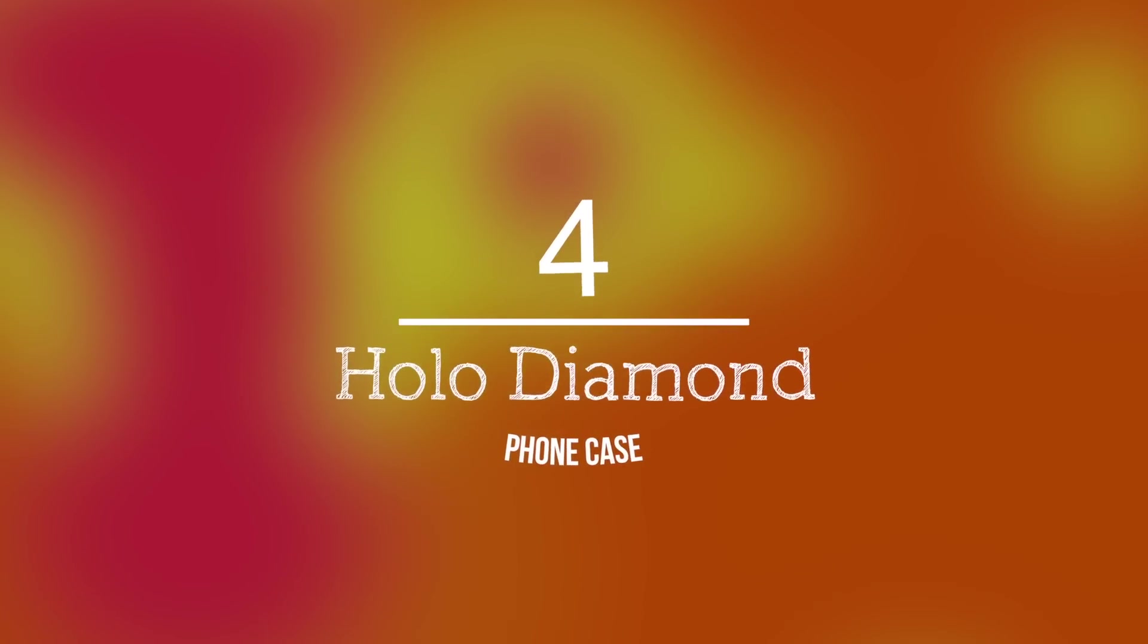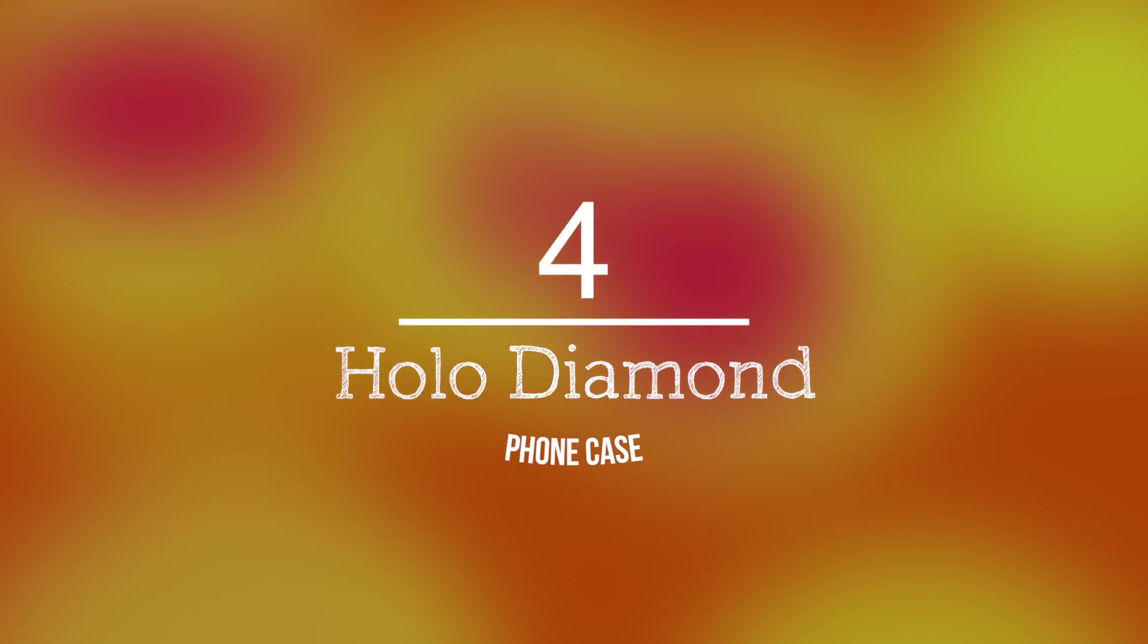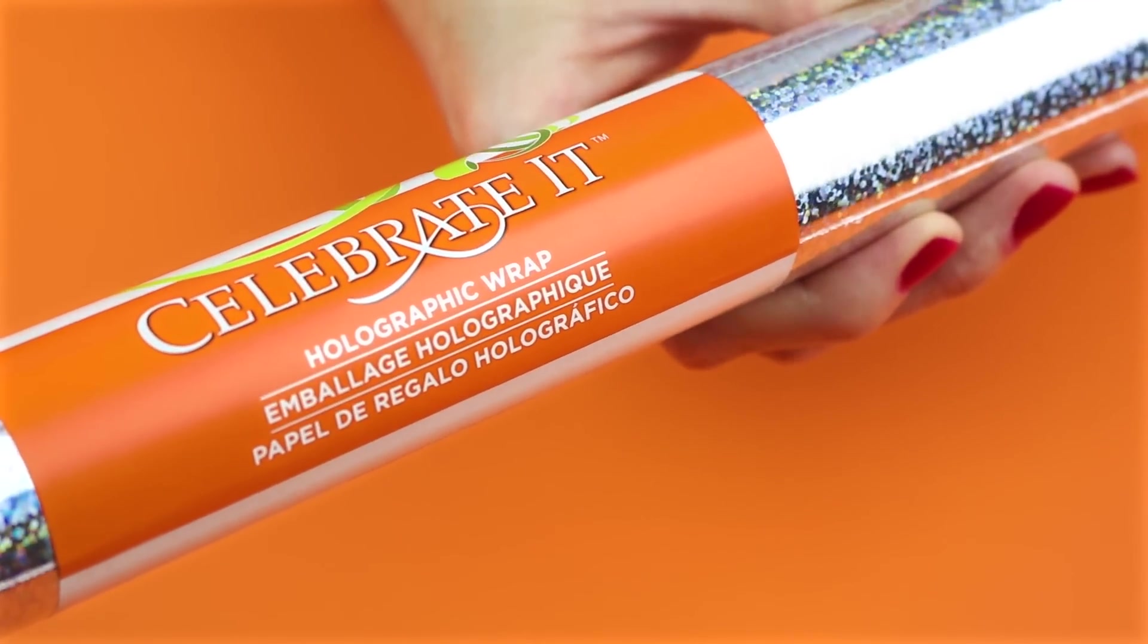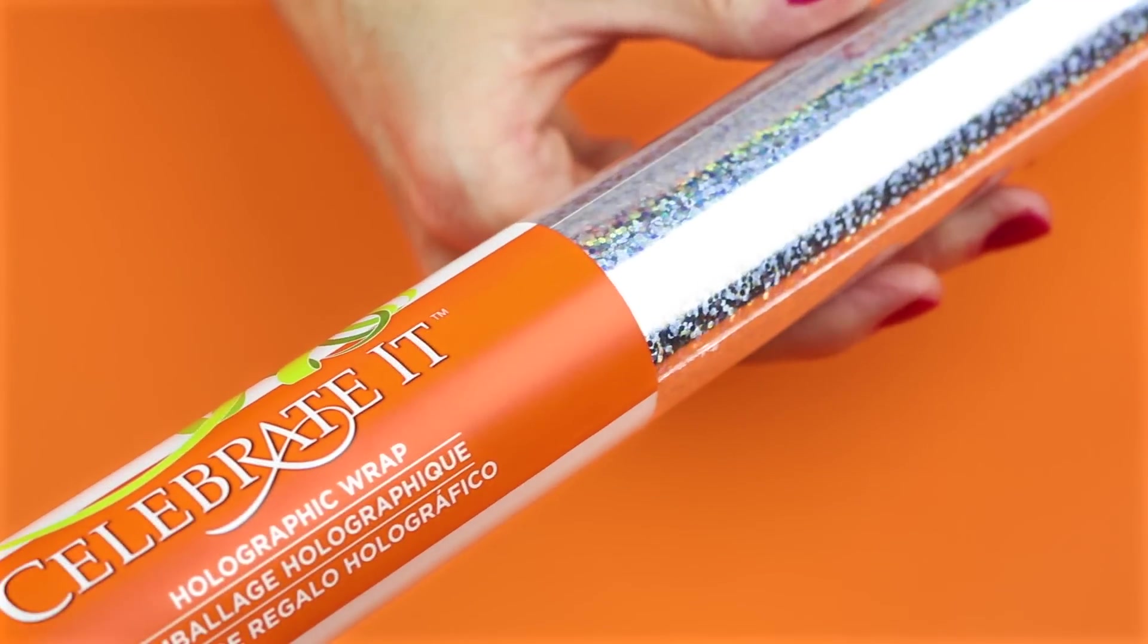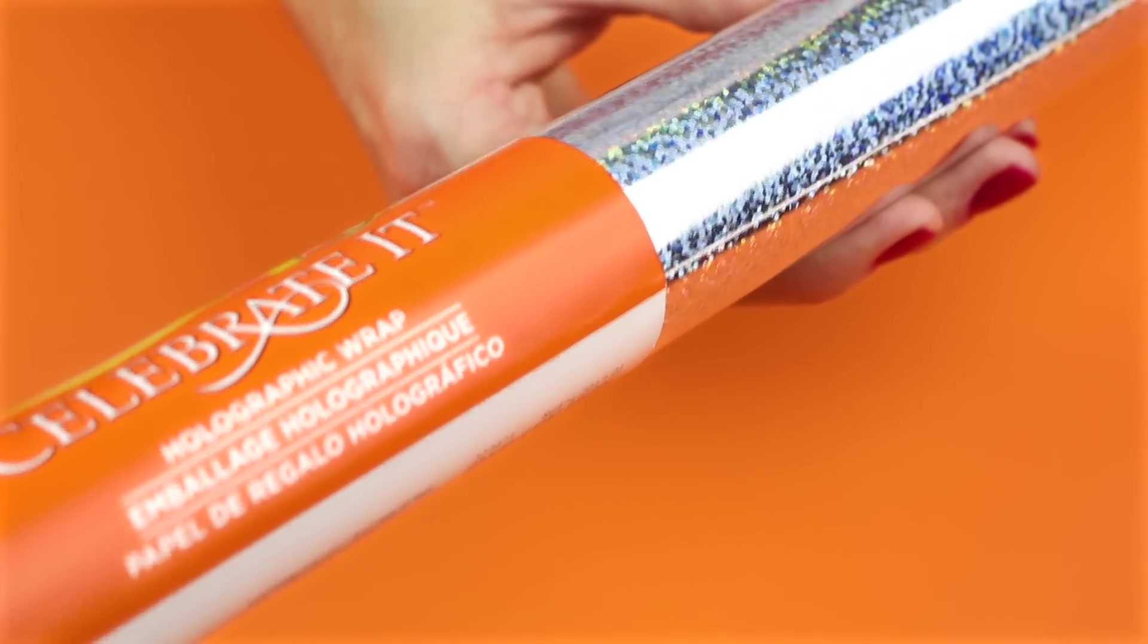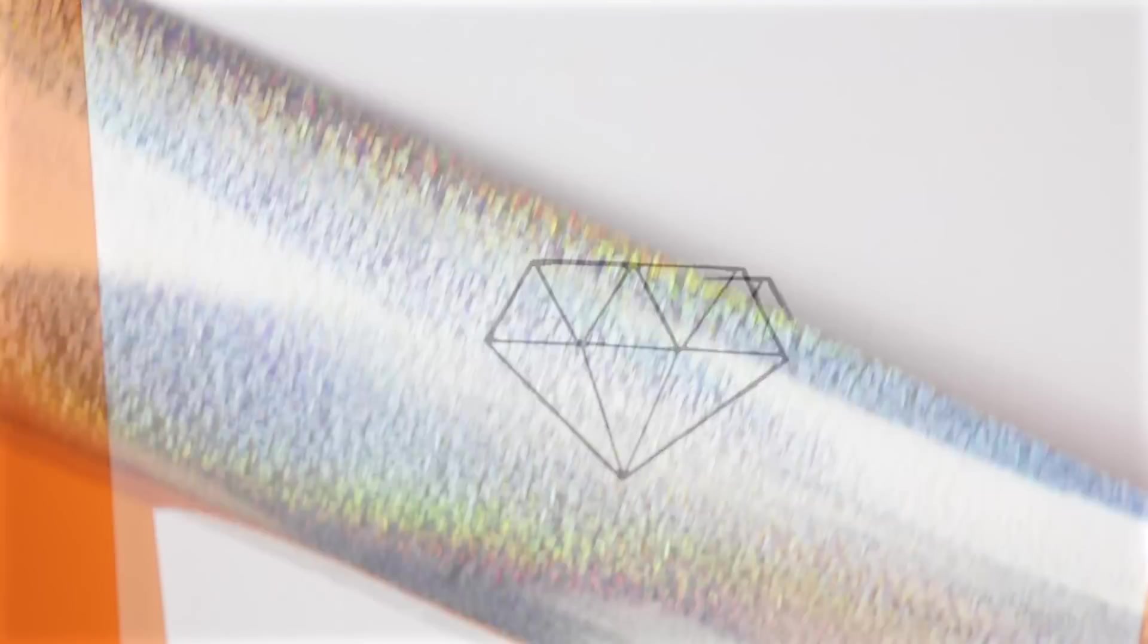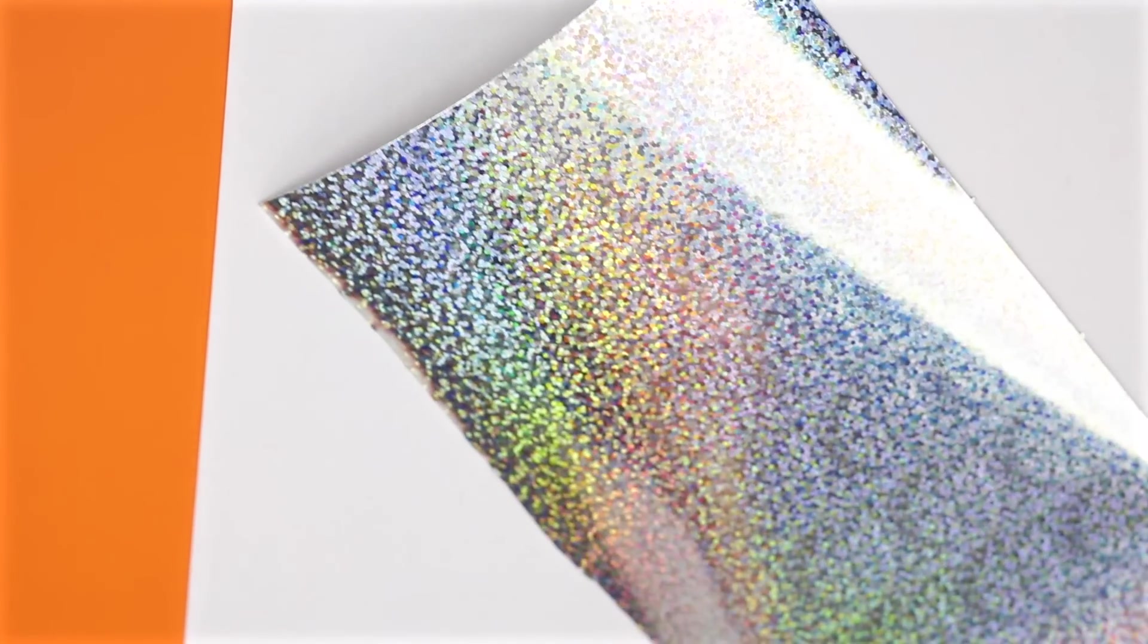The fourth DIY phone case will be a holo diamond phone case. For this one, I'm going to use this holographic gift wrap that I found at Michael's. I printed out this diamond shape. I will leave a link down below where you can print this out. The next thing that I did was I cut out a little piece of the gift wrap off of the roll.